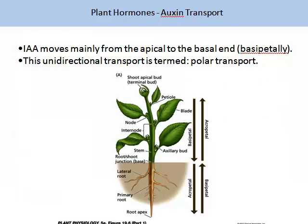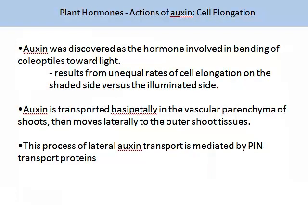Auxin, or IAA, moves from the apical to the basal end — this is called basipetally. This unidirectional transport is termed polar transport. The image on the slide summarizes the movement of IAA. Auxin was discovered as the hormone involved in the bending of coleoptiles towards light, which results from unequal rates of cell elongation on the shaded side versus the illuminated side. Auxin is transported basipetally in the vascular parenchyma of the shoots, then moves laterally to the outer shoot tissues. The process of lateral auxin transport is mediated by PIN transport proteins.